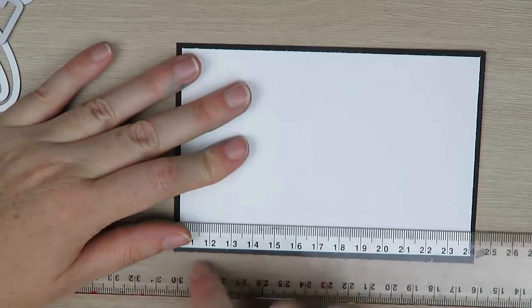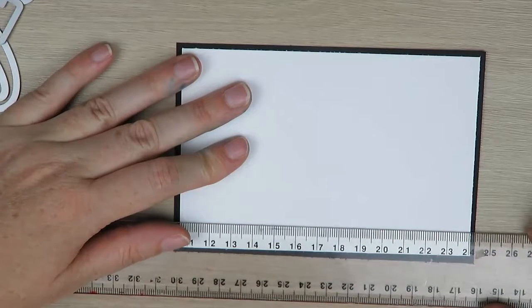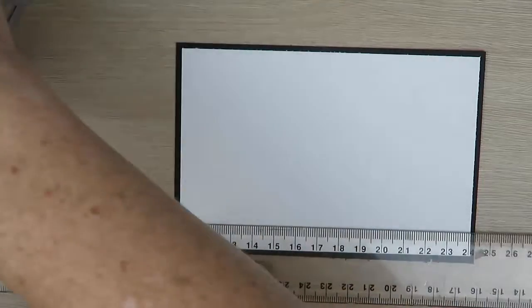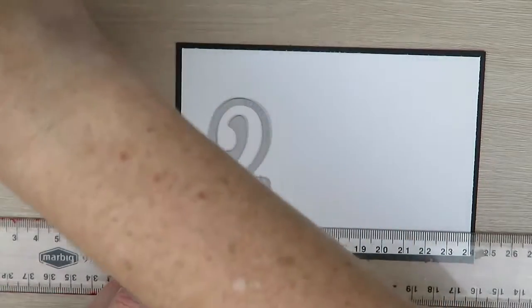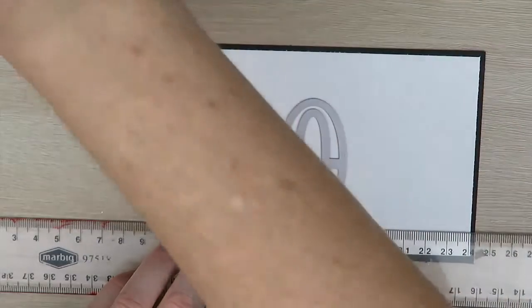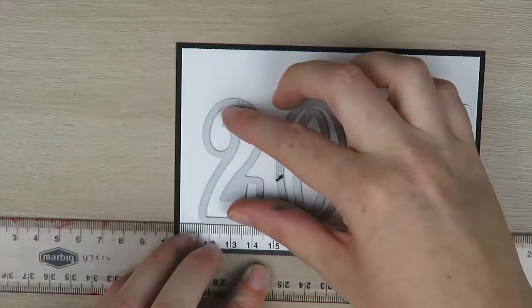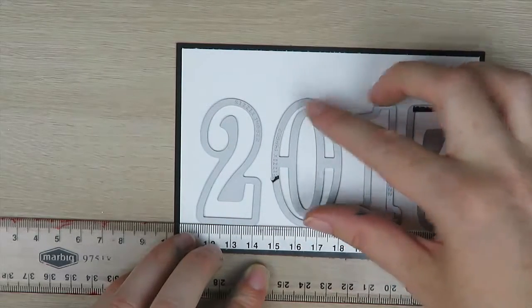So next what I'm going to do is I'm going to use my ruler and I'm just lining up the bottom of my white part to the bottom of my numbers on my ruler here. You can use your grid paper to line things up as well. And I'm going to place my year 2017, make sure they're all nicely spaced evenly apart.